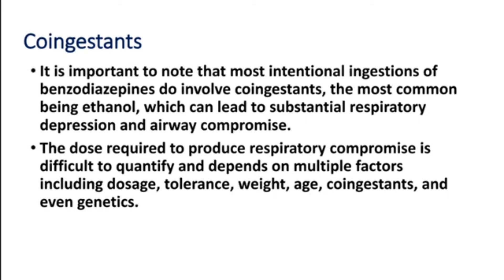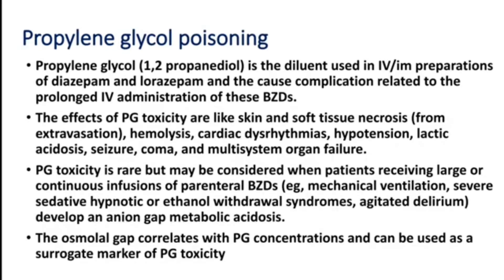The dose required to produce respiratory compromise is difficult to quantify and depends on multiple factors: the dose taken, tolerance to the drug, weight and age of the patient, co-ingestions like other drugs, and even genetics. When larger doses are taken along with phenobarbital or alcohol, patients can have a faster onset of symptoms. Another important factor is the drug used as a diluent in IV preparations — propylene glycol — which can also produce effects on toxicity.